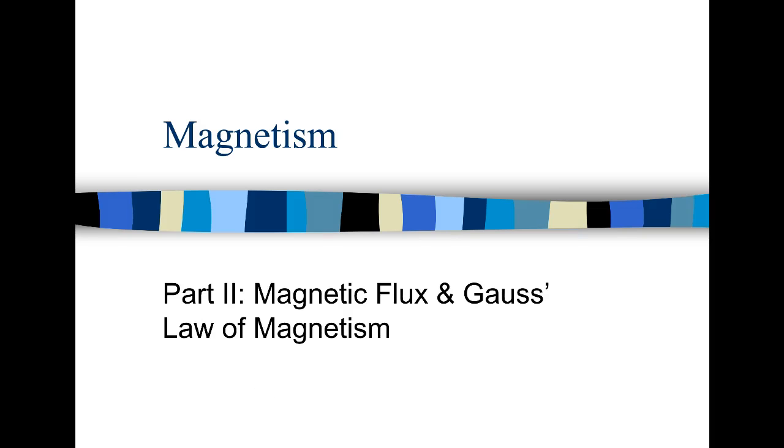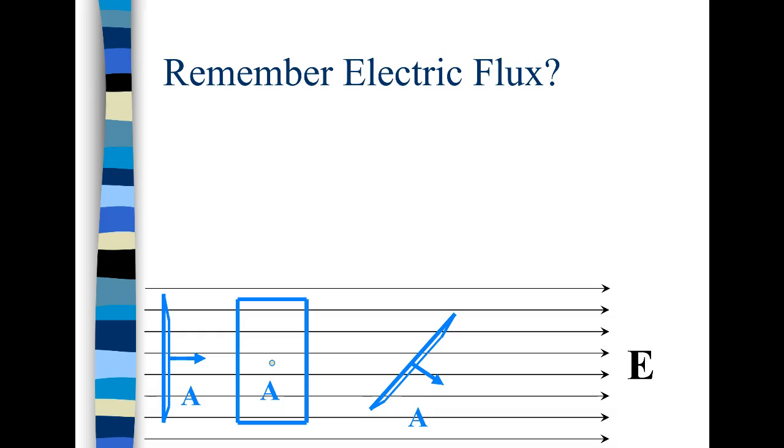So we're going to start by reviewing electric flux. Remember in our unit on chapters 21-22 on electric energy and fields, we talked about the concept of flux which is essentially the dot product of the electric field with the area vector, or in other words how much of the electric field is going through this area. We defined an area vector A that was perpendicular to this.